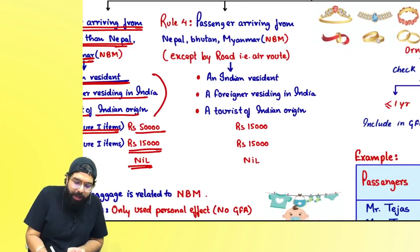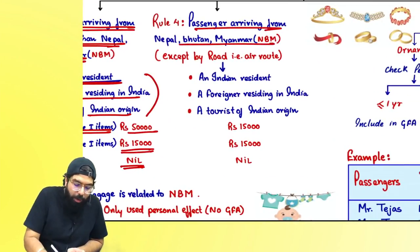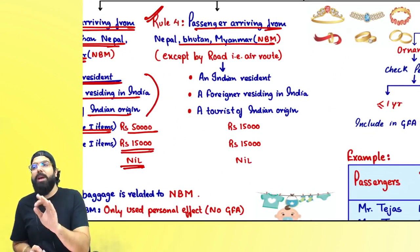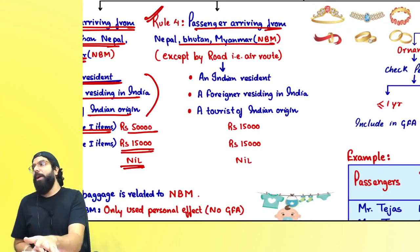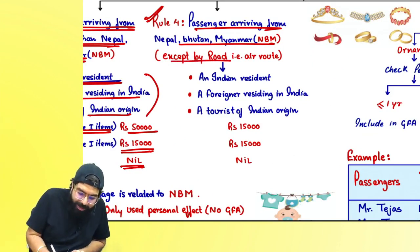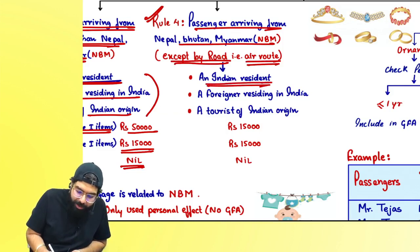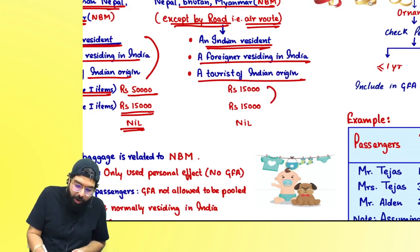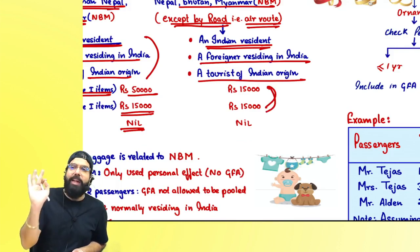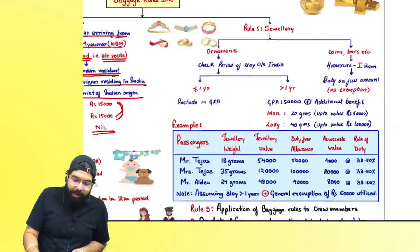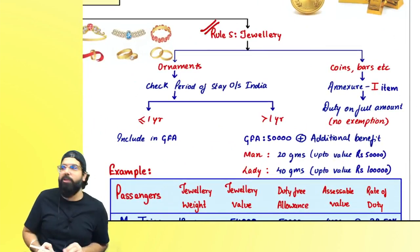Rule 4 is applicable for arrivals from Nepal, Bhutan, and Myanmar. If coming by land route, nothing will be allowed as general free allowance. If coming by air route, whether you are an Indian resident, foreigner residing in India, tourist of Indian origin, or a foreign tourist, all will be allowed only 15,000. For an infant baby, it is nil.